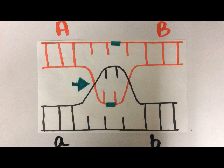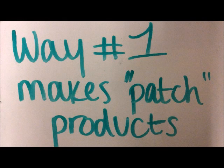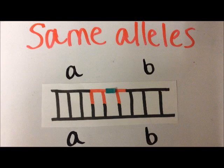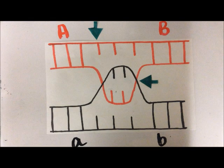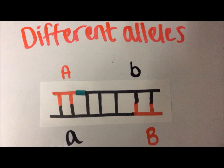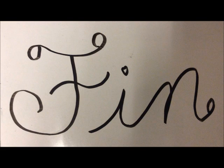The junction can be resolved in two ways. In the first way, it is cut at the indicated sites to produce patch products. These aren't crossover products because they have the same alleles. In the second way, cutting at the indicated sites leads to crossover products that contain different alleles.